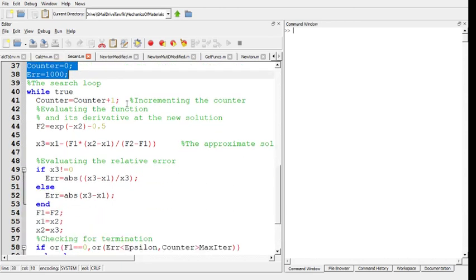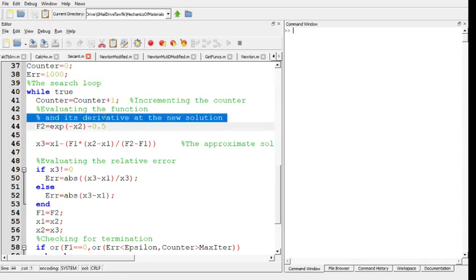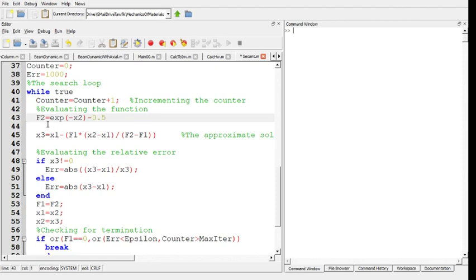We initialize the counter and the error and start the search loop. Inside the loop, you increment the counter, you don't have the derivative here. Then we get to getting X3 using X1, X2, F of X1 and F of X2.